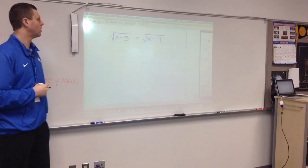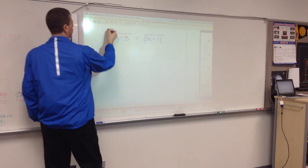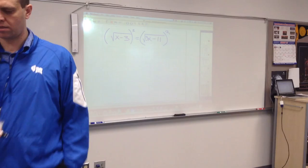Let's try this one here. The square root of x minus three equals the square root of three x minus eleven. Square both sides. Why? Get rid of both of them. It'll undo both square roots.